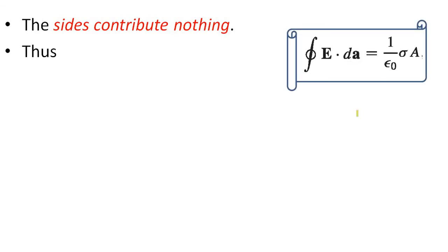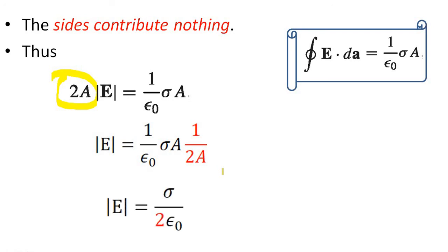Thus the equation can be rewritten like this: 2A E equal to 1 by epsilon 0 sigma A. Now we can rearrange the equation. That is E equal to 1 by epsilon 0 sigma A into 1 by 2A and A will be cancelled. So E equal to sigma by 2 epsilon 0. In vector form we can take the direction also: E equal to sigma by 2 epsilon 0 n cap.